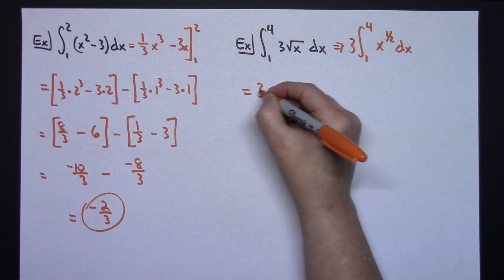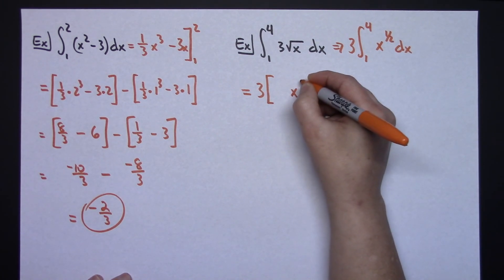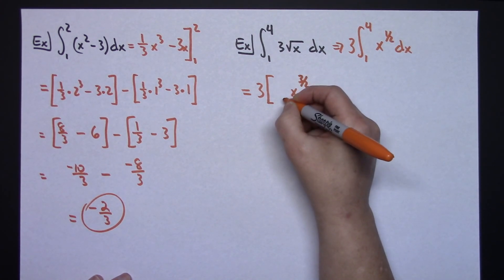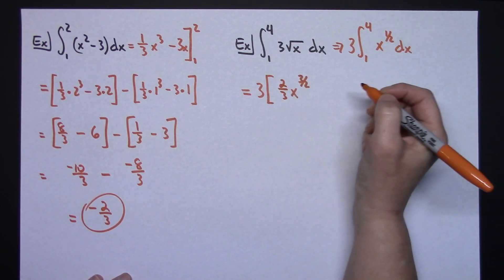I'm going to have my 3 on the outside. Alright, now let's go ahead and integrate that. I've got a 1 half. If I add 1, I'd be adding 2 over 2, which will give me an exponent of 3 halves. So, exponent of 3 halves, and then 1 over 3 halves is going to give me that 2 thirds coefficient in front.